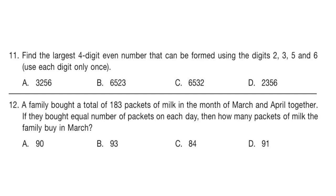Question 11: Find the largest 4-digit even number that can be formed using the digits 2, 3, 5, and 6. Use each digit only once. Here, you have to form a 4-digit even number. The correct answer is option C, 6,532.